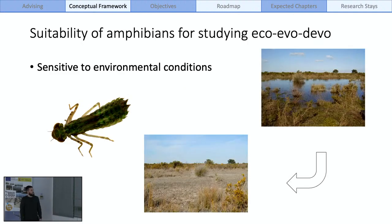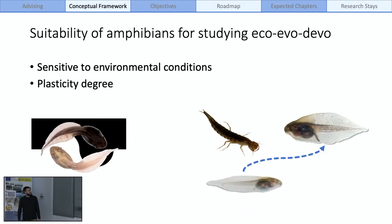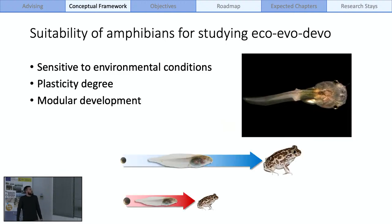A plastic phenotypic trait that is induced by environmental conditions in a scenario with reduced environmental heterogeneity can lose this sensitivity to the environment and become a trait controlled by genetic factors. This genetic accommodation can promote trait diversification and expression. Amphibians are a perfect model for studying the intersection between ecology, evolution and development, mainly because they are really sensitive to different environmental conditions.